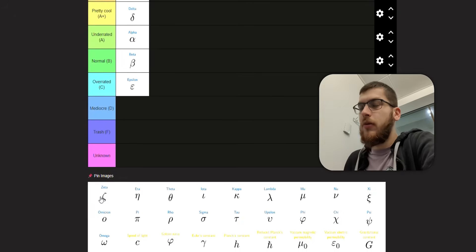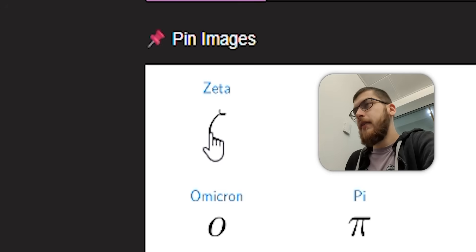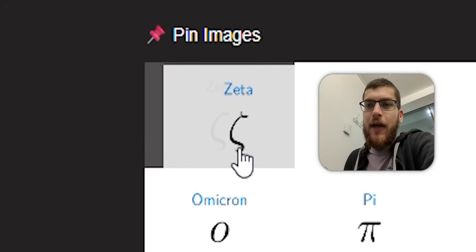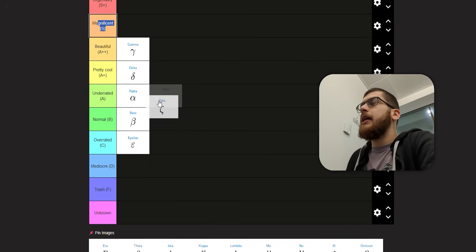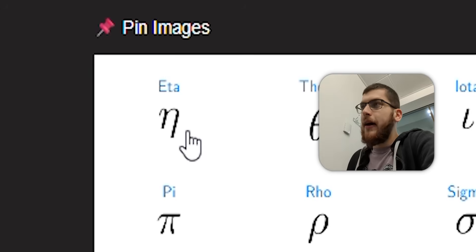Zeta, used in the Riemann zeta function, obviously. And it is quite beautiful. It is easy-ish to write once you get the hang of it. This symbol's probably underrated. It's probably A tier.